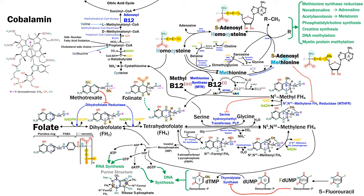Finally, briefly mentioning one more drug — 5-fluorouracil, also known as 5-FU. 5-fluorouracil is a more targeted chemotherapy drug that only inhibits the thymidylate synthase reaction. It's a prodrug that mimics uracil and irreversibly inhibits the enzyme, known as a suicide substrate. It kills cancer cells by depleting thymidine and causing DNA damage when uracil is incorporated instead.